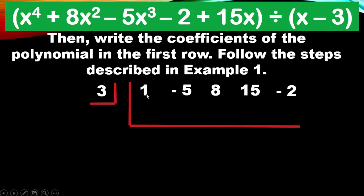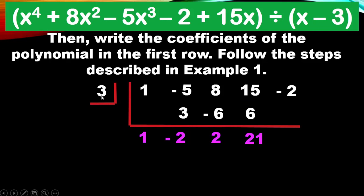Performing synthetic division: bring down 1. Then 1 × 3 = 3; −5 + 3 = −2. Then −2 × 3 = −6; 8 + (−6) = 2. Then 2 × 3 = 6; 15 + 6 = 21. Then 21 × 3 = 63; −2 + 63 = 61. The third row coefficients are 1, −2, 2, 21, and 61.